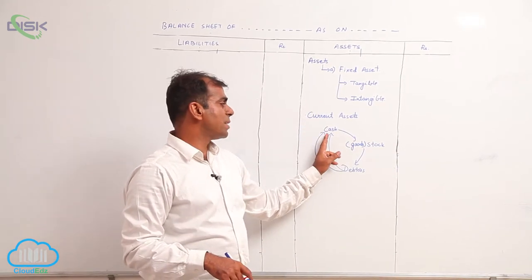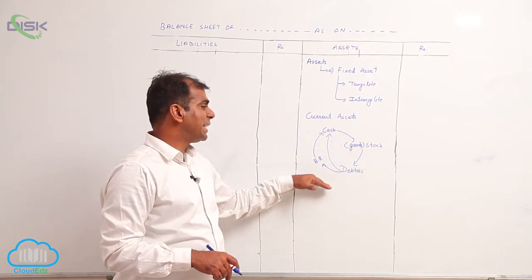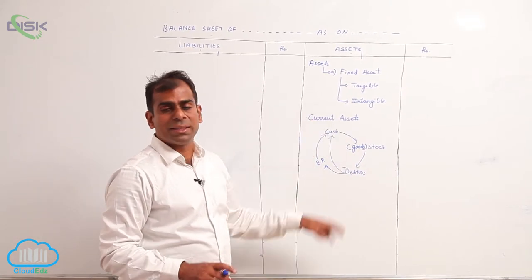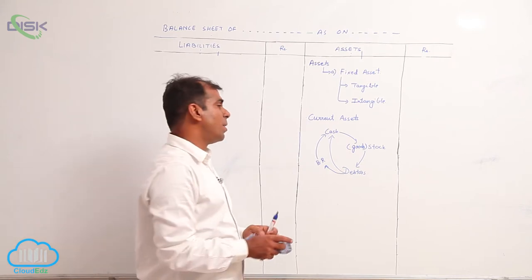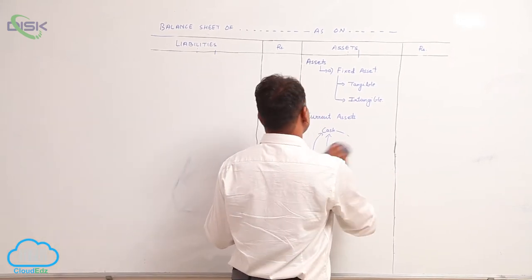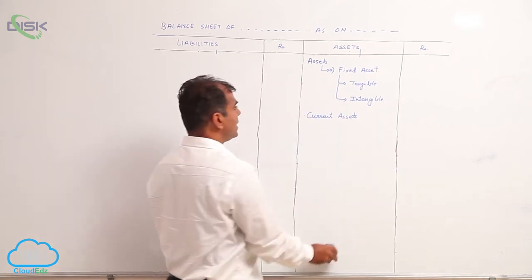Means the cash form which is changing to other forms and gets converted into cash within one financial or within one accounting year. This is what current assets are about.